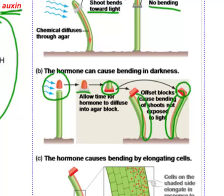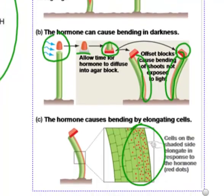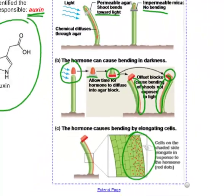So once again we understand that what's happening is that the cells on one side of the plant are the ones that are elongating, and the hormone — auxin, shown here as red dots — is what's causing these cells to grow a little bit faster and a little bit longer than the cells on the other side.